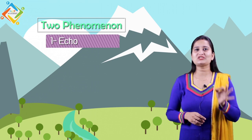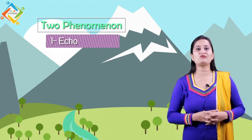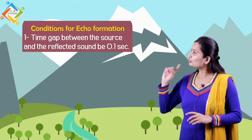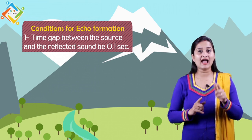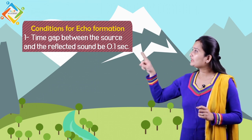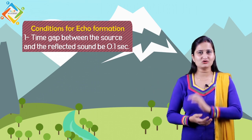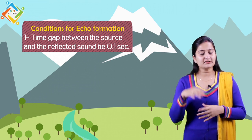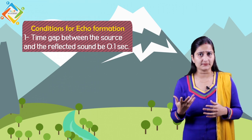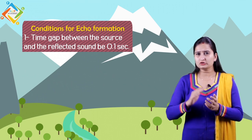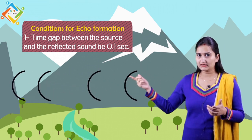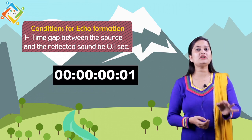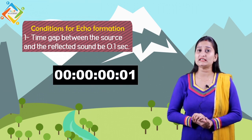There are special conditions required for echo formation. The first condition is that the time gap between the source sound and the reflected sound must be at least 0.1 seconds. I know it is a fraction of a second and difficult to measure, but this is the time for which our brain persists and can hear a sound. If I clap and the waves travel out and return to my ears, and that time duration is 0.1 seconds, then in that condition I will hear the echo.